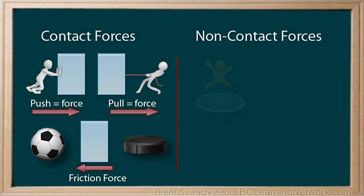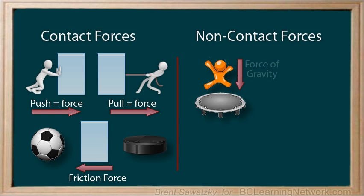What happens when you jump up? Something pulls you back down, and that's the force of gravity. You can't see it, but you definitely feel it every time you trip. Gravity is quite an amazing force — it keeps our planets in orbit and also keeps water in your glass. A skydiver jumping out of a plane has no contact with the Earth, but they are definitely being pulled towards the center of the Earth.